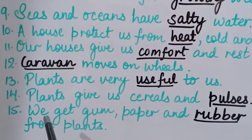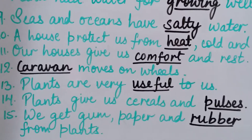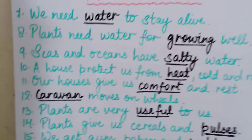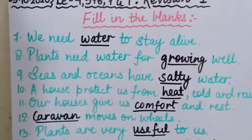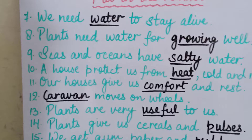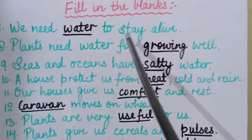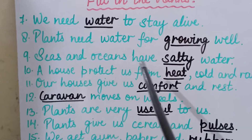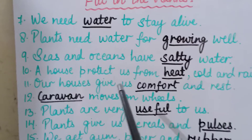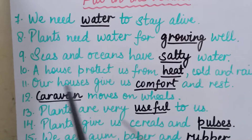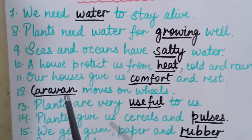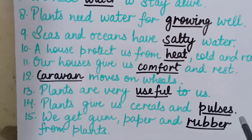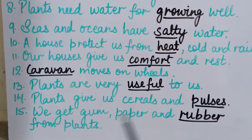Fifteenth sentence: We get gum, paper and R-U-B-B-E-R, rubber, from plants. To repeat sentences seven to fifteen: We need water to stay alive. Plants need water for growing well. Seas and oceans have salty water. Our house protects us from heat, cold and rain. Our houses give us comfort and rest. Caravan moves on wheels. Plants are very useful to us. Plants give us cereals and pulses. We get gum, paper and rubber from plants.